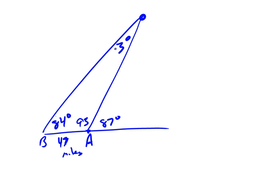Once you're here now, you can use the law of sines. This is the side I'm looking for. So x over the sine of 84 degrees is the same as 47 over the sine of 3 degrees.